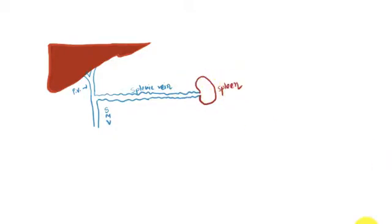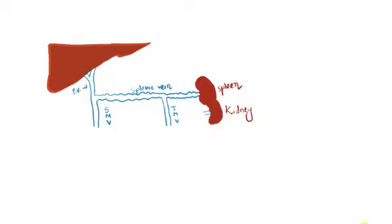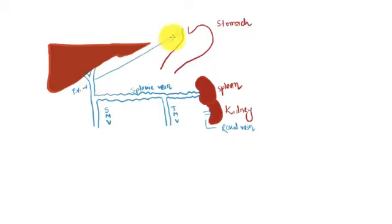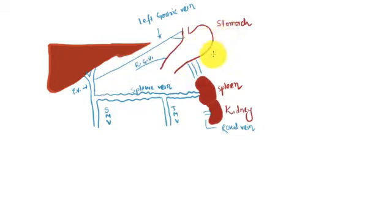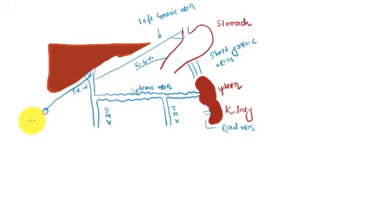This is the spleen, which is drained by the splenic vein. Here we have the inferior mesenteric vein, the kidney and renal vein, the stomach, and the left gastric vein which drains the stomach into the portal circulation. There is also the right gastric vein and short gastric veins connecting the stomach to the splenic vein.